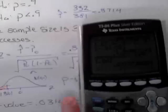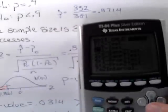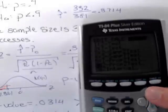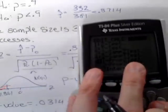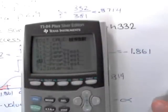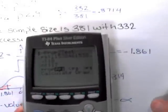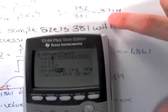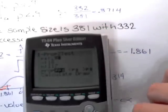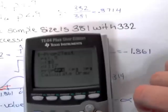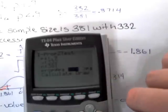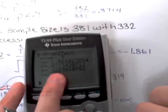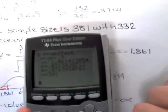We can do this all in the calculator by doing a stat test. This is a one sample proportion test, this is number five. The sample proportion in this case is 0.9. We had 332 successes out of 381. This is a left side test, and then calculate. We get the same p-value and test statistic here.